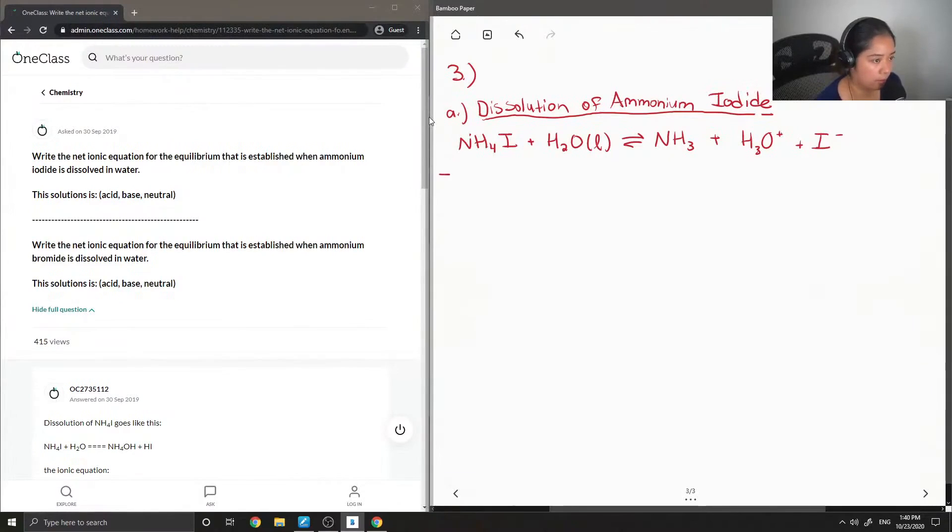So now I'm going to write out the ionic equation. If we were to write ammonium iodide separated into its ions, it would be NH4 plus plus I minus. Since this water is a liquid, I'm not going to write it in an ionic form, and then this side stays the same.